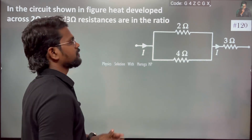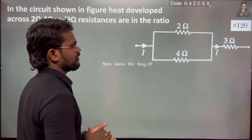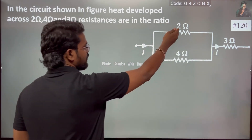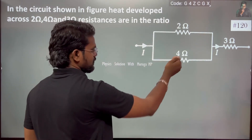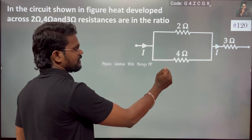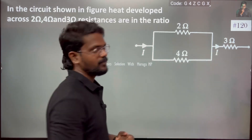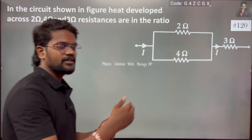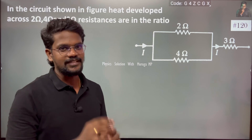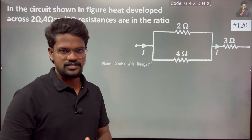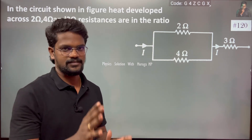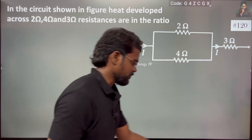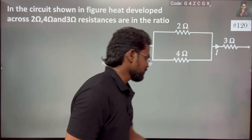They are asking: how much heat is developed in each resistor? We need to find the ratio of heat developed across the 2Ω, 4Ω, and 3Ω resistors.